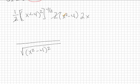And on the top, we have 2x times x squared minus 4.